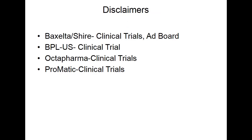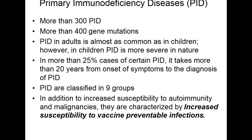As usual, we have to give some disclaimers. The primary immunodeficiency diseases — although we started with very few of them — as of today we have more than 300 different primary immunodeficiency diseases. They are more than 400 gene mutations assigned to these disorders, and one very important thing to realize is that, as the name suggests, we always think about them as diseases of children.